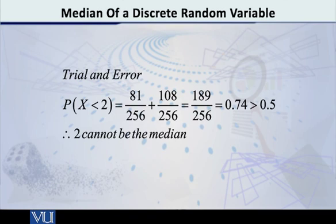Alright, so what is condition number one? That the probability of capital X being less than small x should be less than or equal to half. So now, this small x should be 2, which I am going to try. So let's do it. Here, I am adding the probabilities.